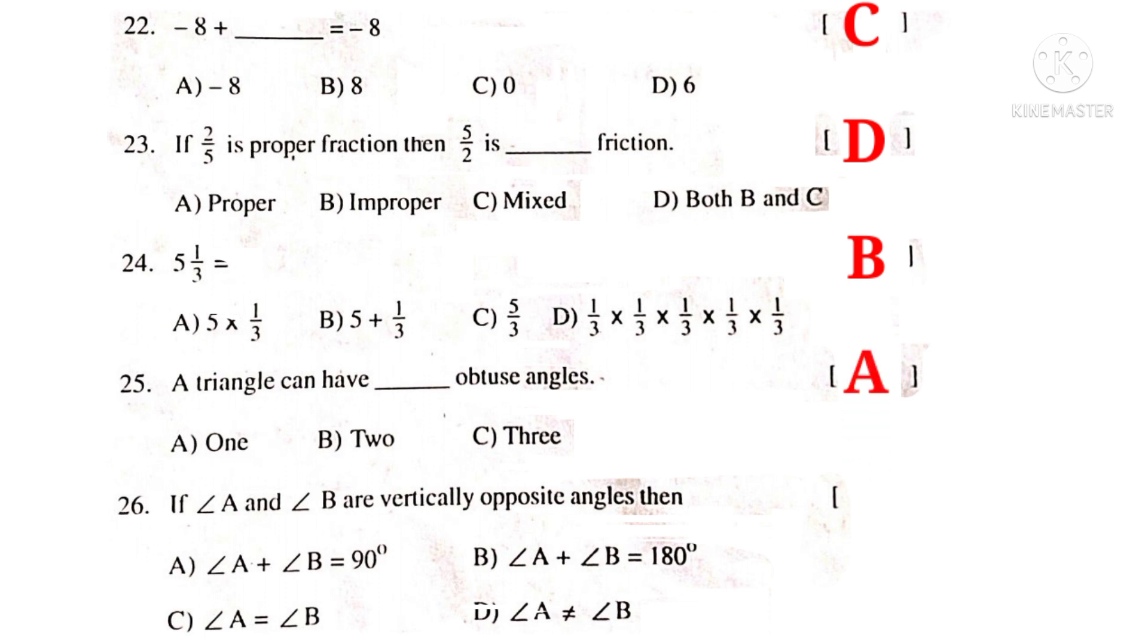If angle A and angle B are vertically opposite angles, then they are equal. Angle A is equal to angle B. So, the correct choice is C.